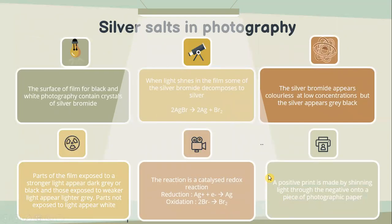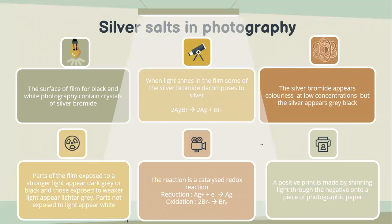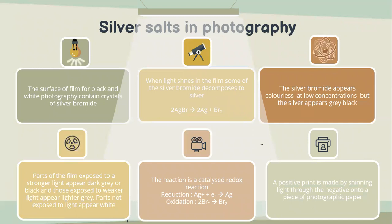Let's look into silver salts in photography. The surface of film for black and white photography contains crystals of silver bromide. When light shines on the film, some of the silver bromide decomposes to silver. Silver bromide appears colourless at low concentration, but silver appears grey-black. Parts of the film exposed to stronger light appear dark grey or black, those exposed to weaker light appear light grey, and parts not exposed to light appear white. The reaction is a catalysed redox reaction involving reduction and oxidation. A positive print is made by shining light through the negative onto a piece of photographic paper.